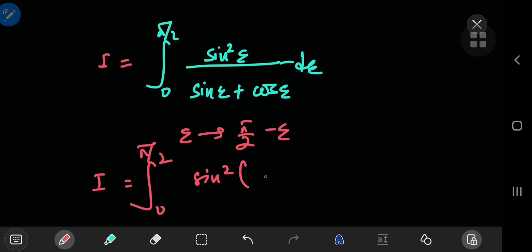We have the square of the sine of pi by 2 minus epsilon, divided by the sine of pi by 2 minus epsilon plus the cosine of pi by 2 minus epsilon, and we're integrating with respect to this epsilon variable.